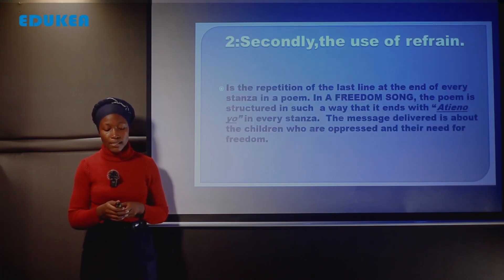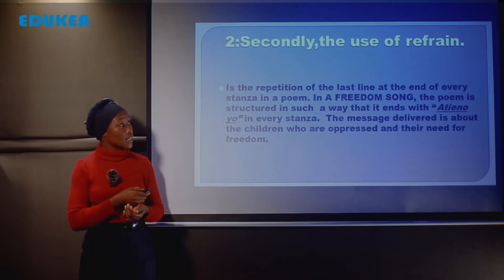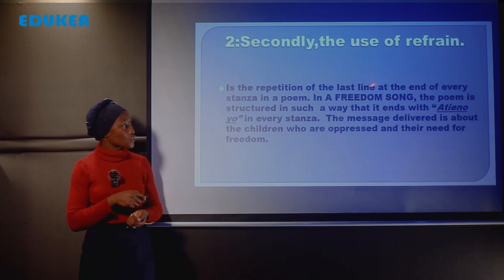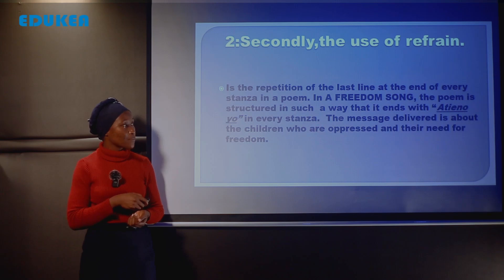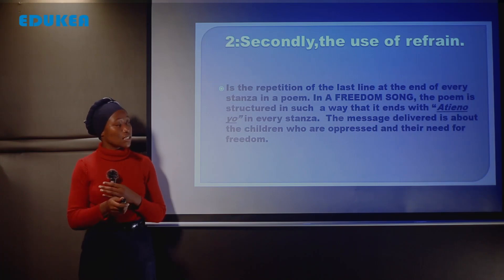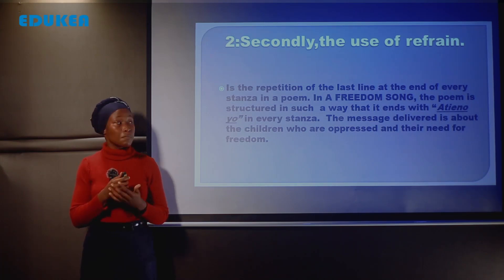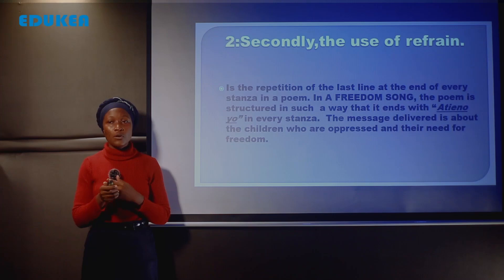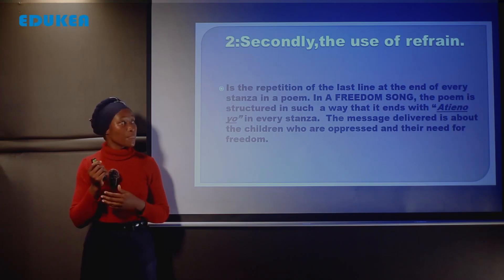The second poetic device is the use of refrain. Refrain is the repetition of the last line at the end of every stanza in the poem. In Freedom Song, the poem is structured so that 'Atieno yo' appears at the end of every stanza, repeated throughout the poem.